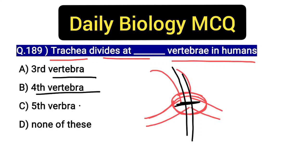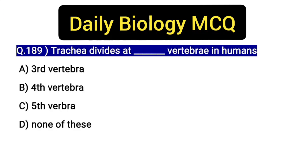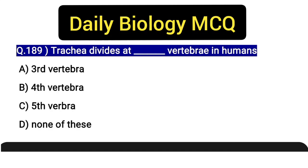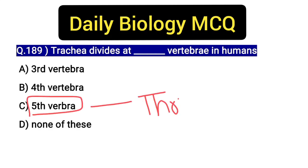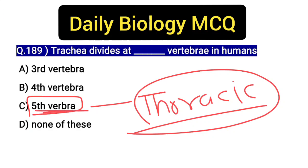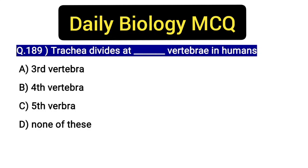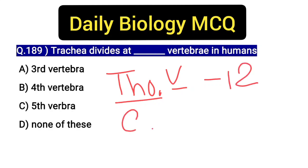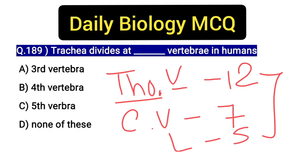The options are: third vertebra, fourth vertebra, fifth vertebra, or none of these. The correct answer is the fifth vertebra. You should note that this is the fifth vertebra of the thoracic region, because the number of vertebrae is different from the cervical region. After number 5, you have to remember that the last 4 and 5 bones are fused, and the first 3 are the most important.